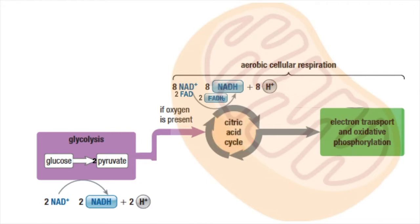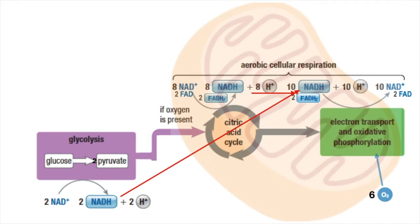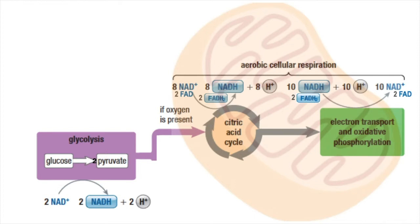By the end of the citric acid cycle, even though the original sugar molecule is gone, we haven't released much energy yet — just four ATP molecules. Most of the energy from the original glucose is in the electron carriers NADH and FADH2, which are now going to transfer their electrons to the electron transport chain. Those electrons will go to oxygen, resulting in the formation of water, and most of the ATP will be made here by oxidative phosphorylation.